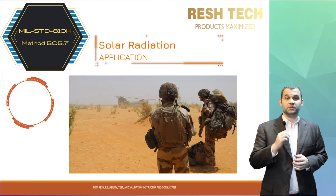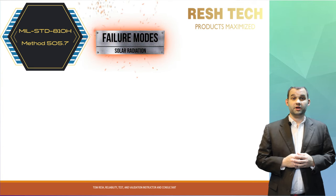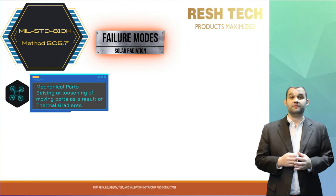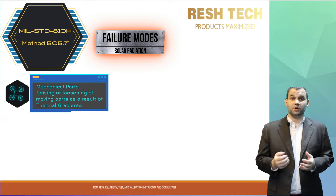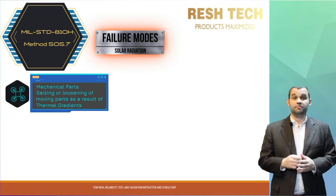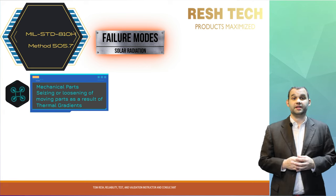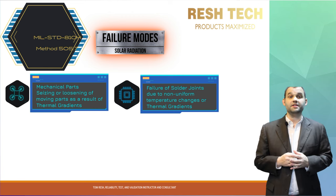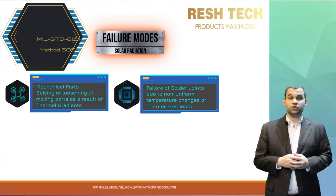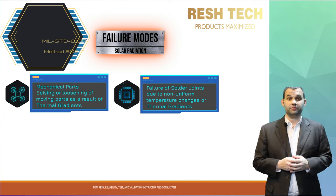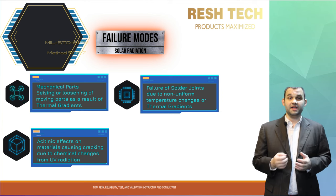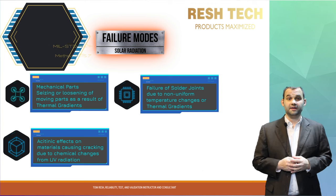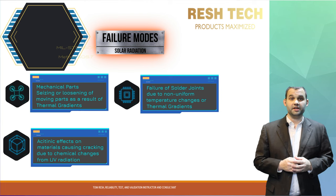Solar radiation failure modes to look out for include mechanical parts — especially parts that move and actuate — either seizing up or becoming loose. This can occur as a result of non-uniform temperature changes and thermal gradients, as different parts of the system heat up faster than others due to the directional heating of the sun. Another failure mode is on solder joints and adhesives, which can become weak or break as a result of non-uniform thermal exposure. Changes in strength and elasticity of materials as they change temperature at different rates, and fading and cracking of materials due to the actinic effects of ultraviolet light, are also failure modes to watch for.